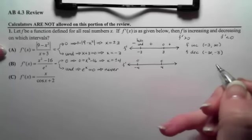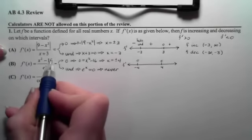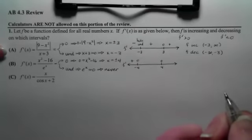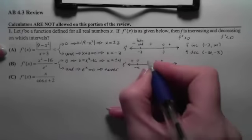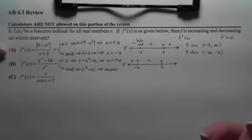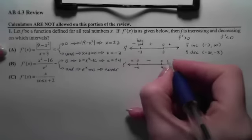Prior to negative 4, say negative 10, this top number will be positive and the bottom is always positive. In between, say at 0, the top will be negative and the bottom will still be positive. And after 4, we will again have positives.